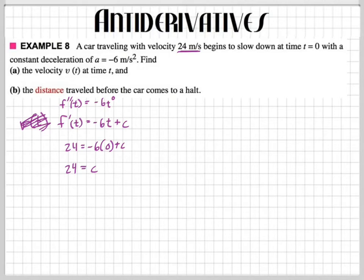So, F prime or V of T, our velocity function, is going to be negative 6 times T plus 24. Alright, so that's the answer to the first part.